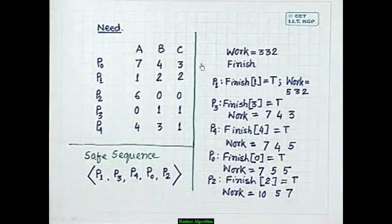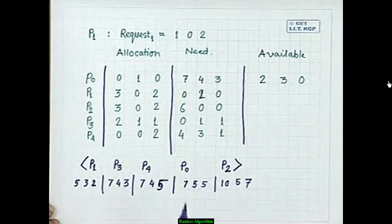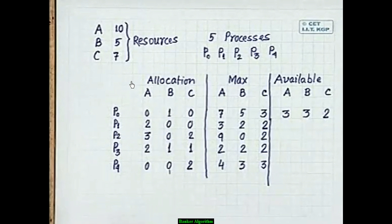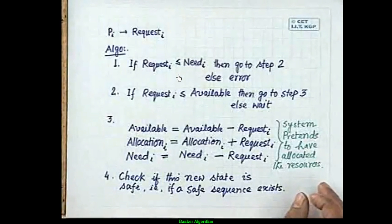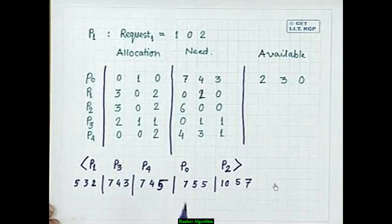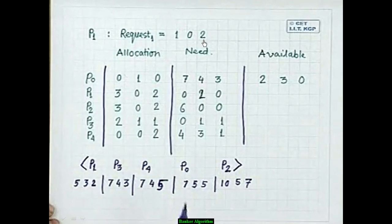Update Allocation[P1] = Allocation[P1] + Request = [2,0,0] + [1,0,2] = [3,0,2]. Update Need[P1] = Need[P1] − Request = [1,2,2] − [1,0,2] = [0,2,0]. These are the new values for Available, Allocation, and Need after the request.